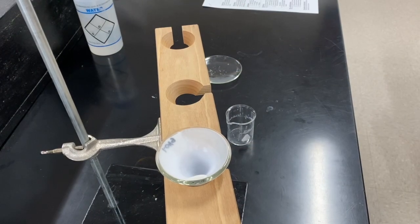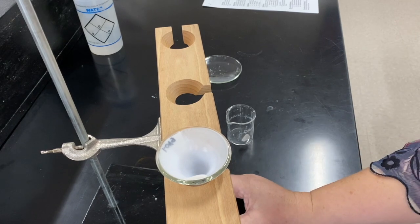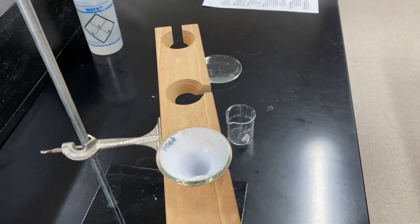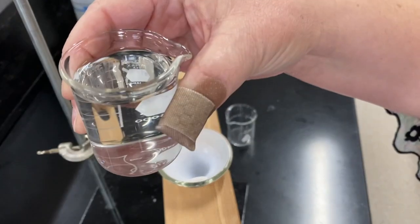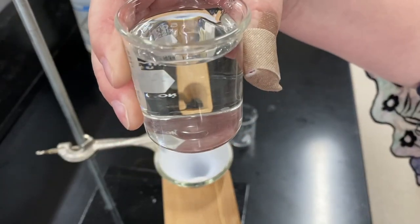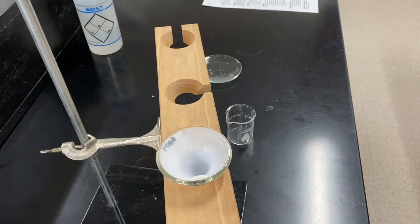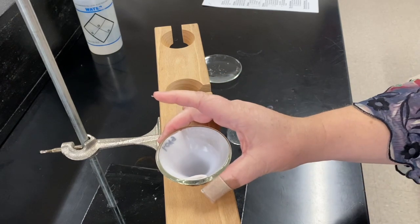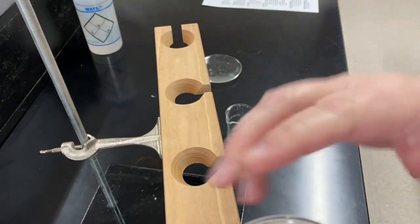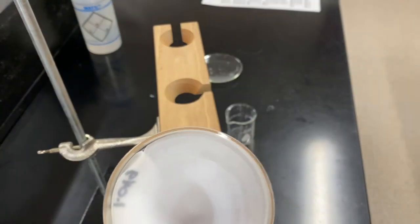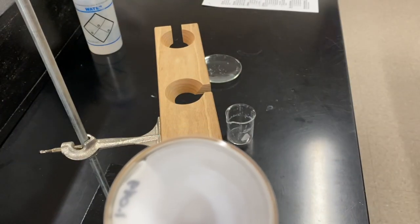Alright, so now that the filtration is done, you can see that the solution that is left is clear and colorless, exactly what we want. That means there's no precipitate that made it through the filter. You can see that the filter paper has almost this frosting-like look to it. That's all of the white precipitate.